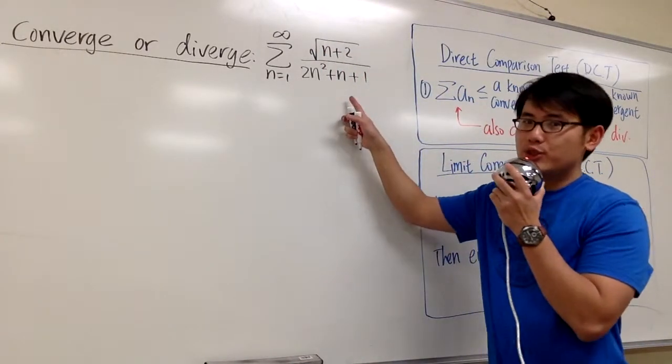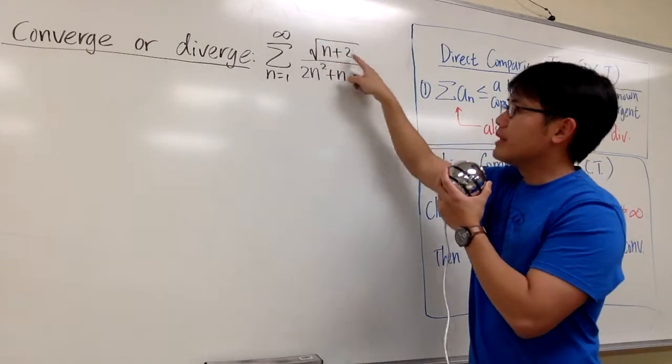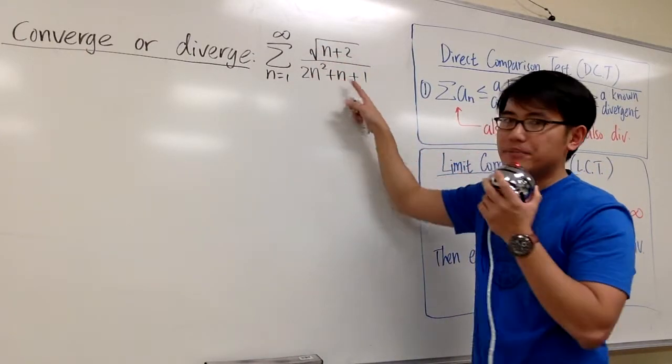We would like to know if this series converges or not: sigma as n goes from 1 to infinity, square root of n plus 2, over 2n squared plus n plus 1.